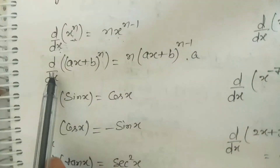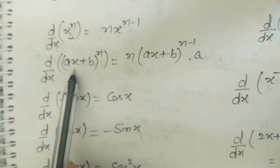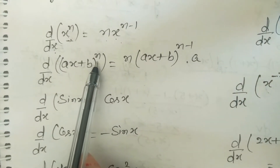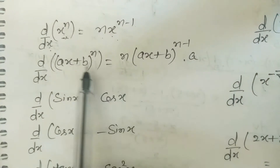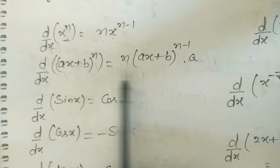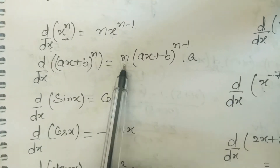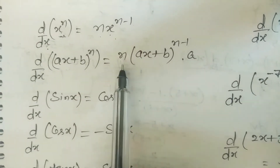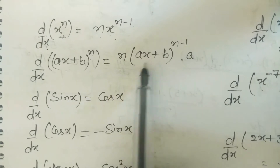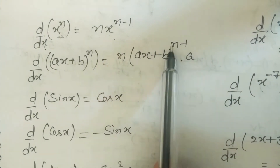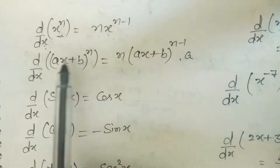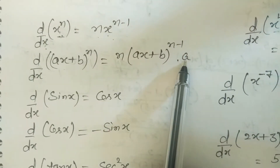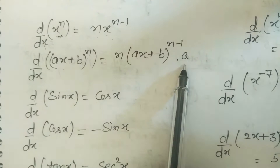Now the next formula: the derivative of (ax+b)^n. We bring the power forward, so it is n·(ax+b)^(n-1)·a, multiplying by the coefficient a.